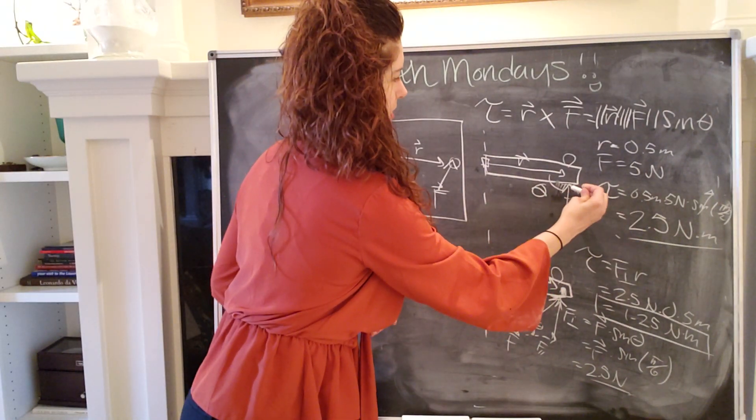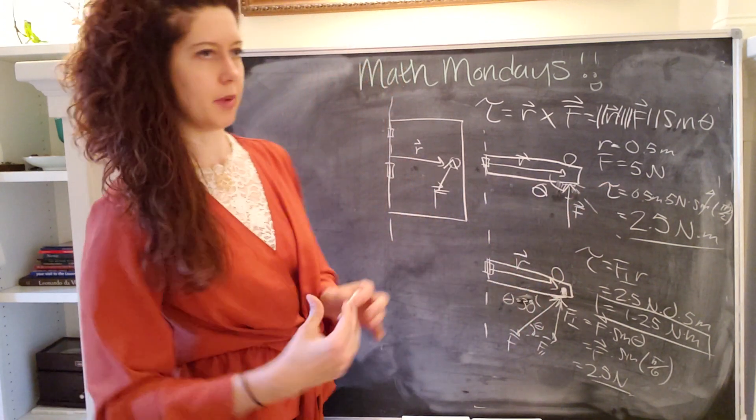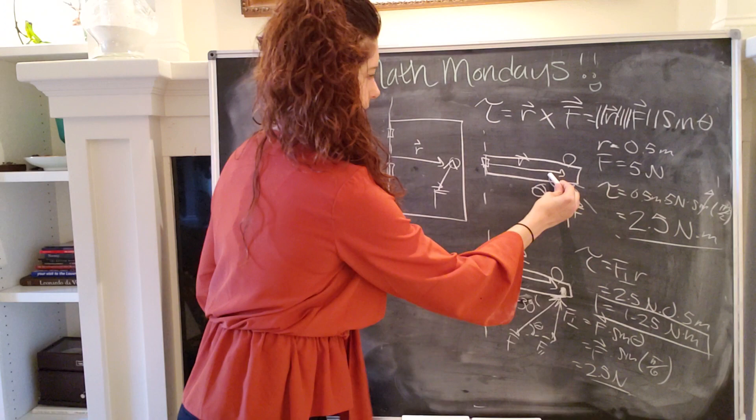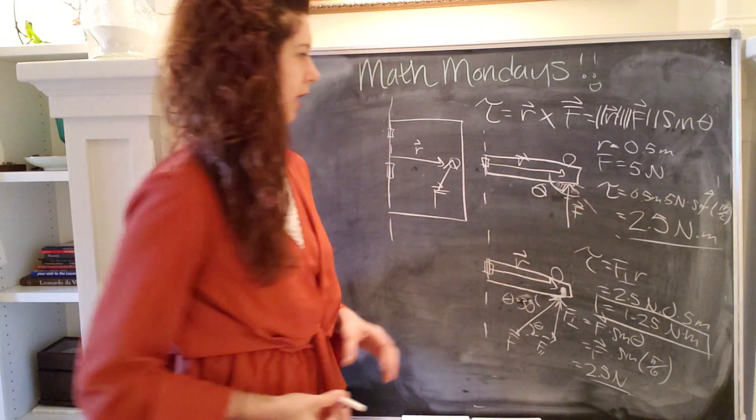And so you could do the same thing, asking what happens if you have an outward angle like that. And so then in this case, the angle between the two would be like that.